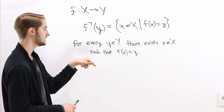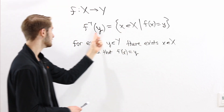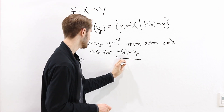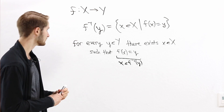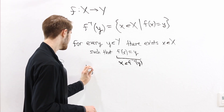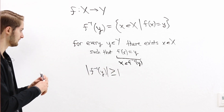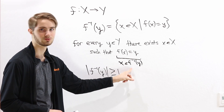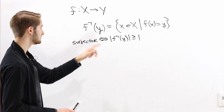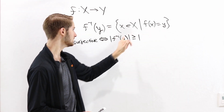We can say this in different words using the idea of a preimage, because f of x equals y is exactly the condition needed for x to be in the preimage of y. So f of x equals y is the same thing as x being in the preimage of y. For every output in the codomain, there's at least one element in the preimage — we write this as the size of f inverse of y being greater than or equal to 1, since there's at least one input that maps to y.